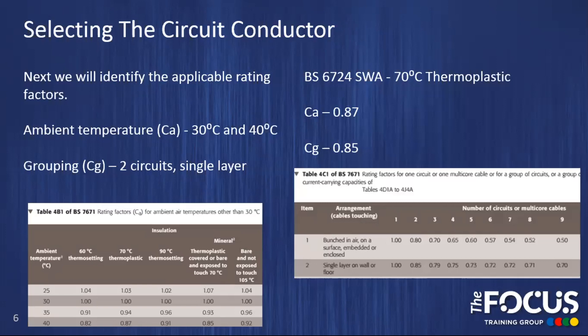Next we have to identify the applicable rating factors. First of all for ambient temperature — in our scenario we were given two ambient temperatures, one of 30 degrees at ground level and one of 40 degrees at high level. With ambient temperatures we have to choose the temperature which will have the most extreme effect on our installation. In this case it would be the higher, which is 40 degrees. To use table 4B1 of BS 7671, we'll have to bear in mind our cable type, BS 6724 SWA which was 70 degrees thermoplastic. This will help us choose the correct column in table 4B1. Looking along the top row we can see a column for 70 degrees thermoplastic. If we look down to the corresponding row for 40 degrees Celsius ambient temperature, we can see our rating factor to use is 0.87.